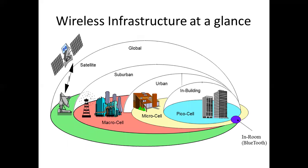We'll discuss the wireless infrastructure components shown here in coming lessons. Our interest is to move from the level of a room — where Bluetooth technology operates in what we call a picocell network — to within a building using a local area network, to an urban center defined as a microcell using a wide area network, then a macrocell in a suburban area, and globally using satellite. We'll discuss satellite technologies, wide area networks, metropolitan area networks, and such.